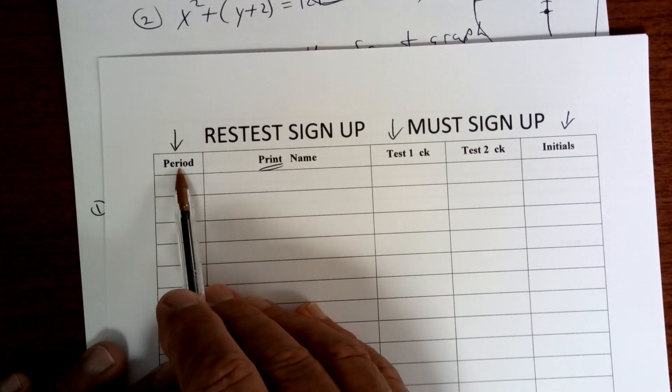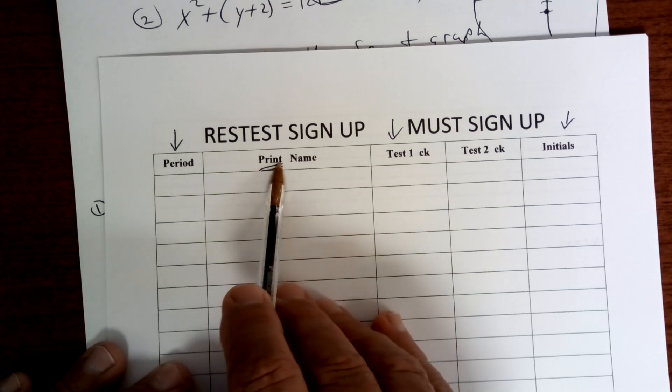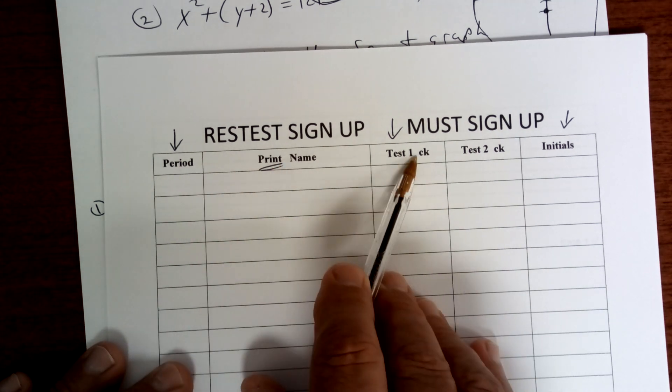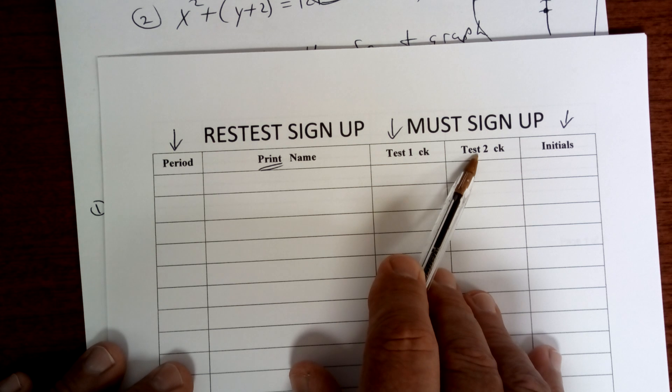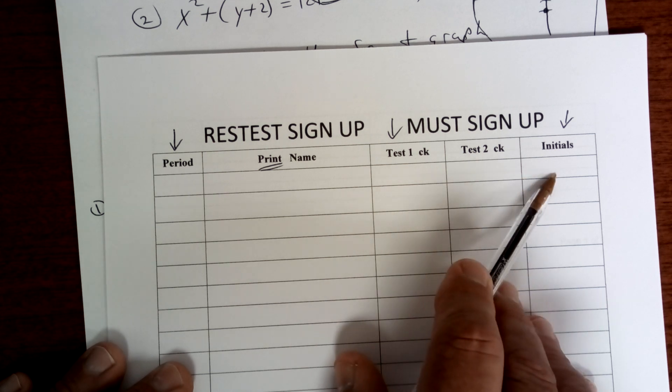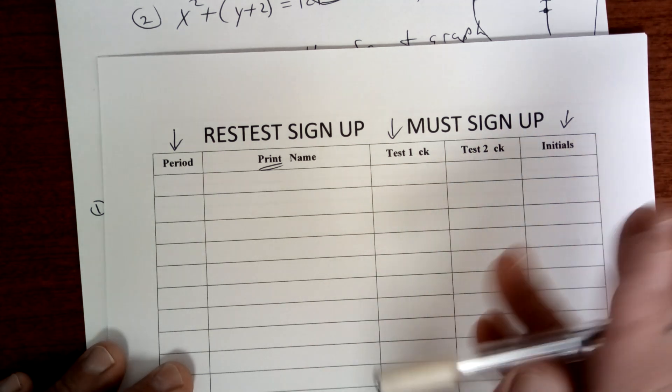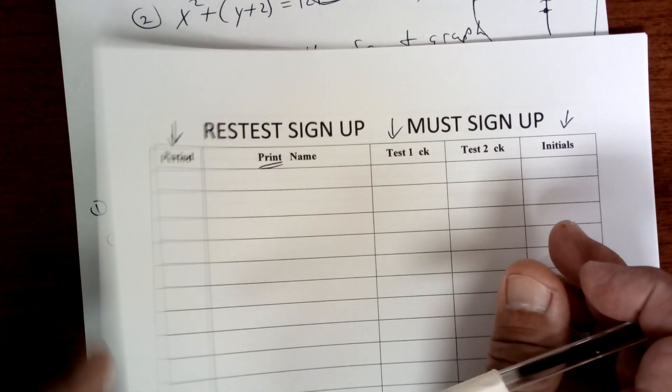Put the period, print your name. I need to be able to read it. Test number one, you can't make up test number two. That's this weekend. And then initial it, and then I've got to get the grades done. Okay, so that's where we are. All right, let's move on now.